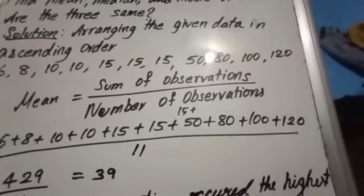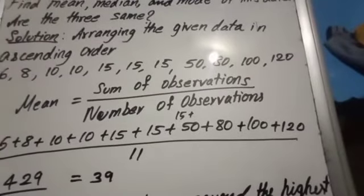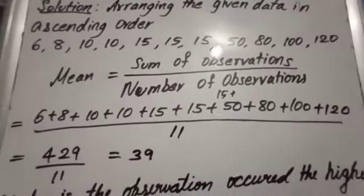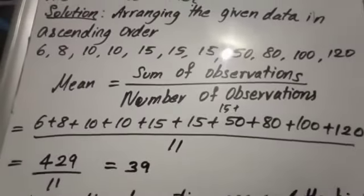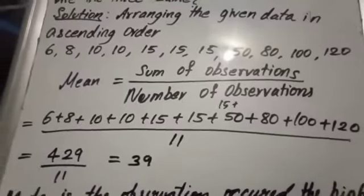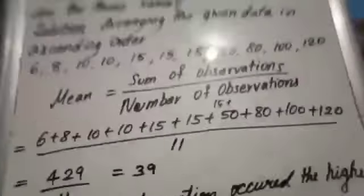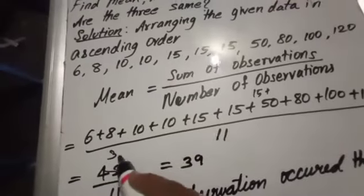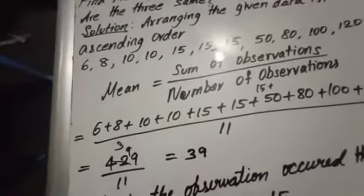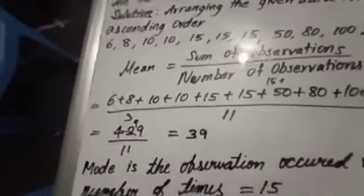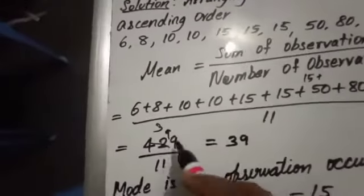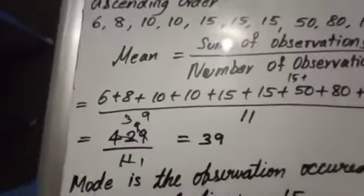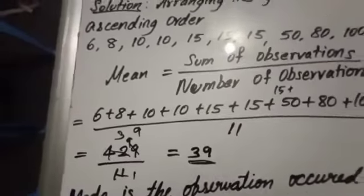79 plus 50 we are getting 129, then 209, 309, 429 divided by 11. 11 times 3 is 33, 11 times 9 is 99, 11 times 1 is 11. So you are getting the mean is 39.